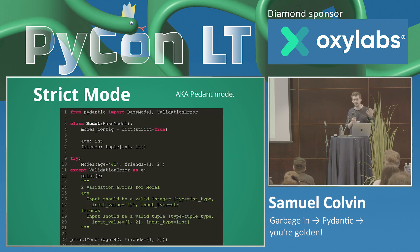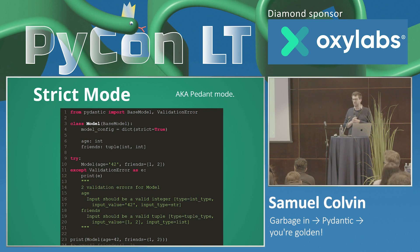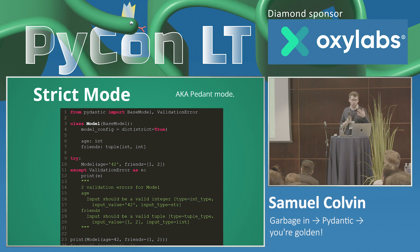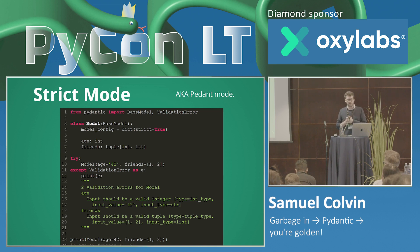Strict mode. We default to coercion in Pydantic V1, but there was no easy way to implement strict mode — something people have complained about for a long time. In V2, you set strict in the model's config, then define fields — say an integer and a tuple with two elements — and run validation. Without strict mode, the string '42' would be coerced to 42 and a list would be coerced to a tuple. In strict mode, you get back a validation error saying the data is invalid.